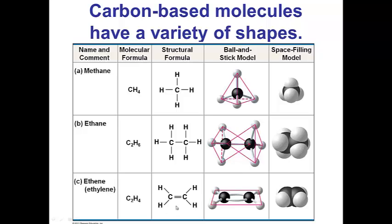In contrast, ethene, which has two carbons that share a double bond, so there are two covalent bonds, so two pairs of electrons are shared.